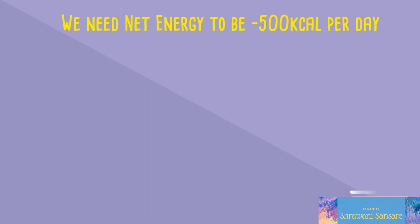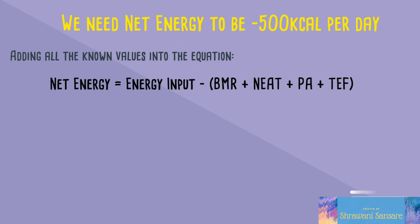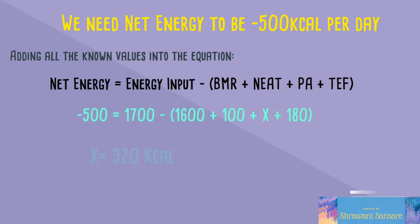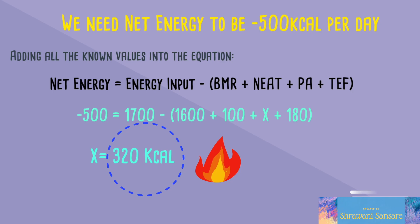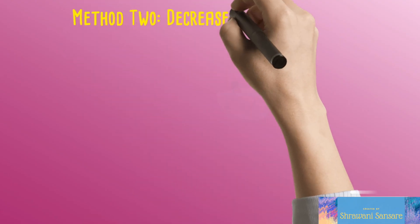To lose one pound per week, net energy needs to be −500 per day. Adding all the known values into the equation, we get X = 320 calories — that's the amount I need to burn through physical activity in order to achieve my goal.